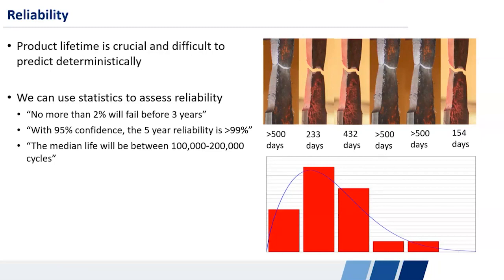So if we have a three-year warranty period, we know that no more than 2% will fail in that period. Or something like with 95% confidence, we can say that the five-year reliability is greater than 99%. If we're making a medical device, maybe we need to prove that the reliability is very high before it can be approved by a regulatory body. Or something like the median life is between 100,000 to 200,000 cycles. So in the case of this metal fatigue, maybe we can make a statement like that rather than a statement like the life is 143,119 cycles.